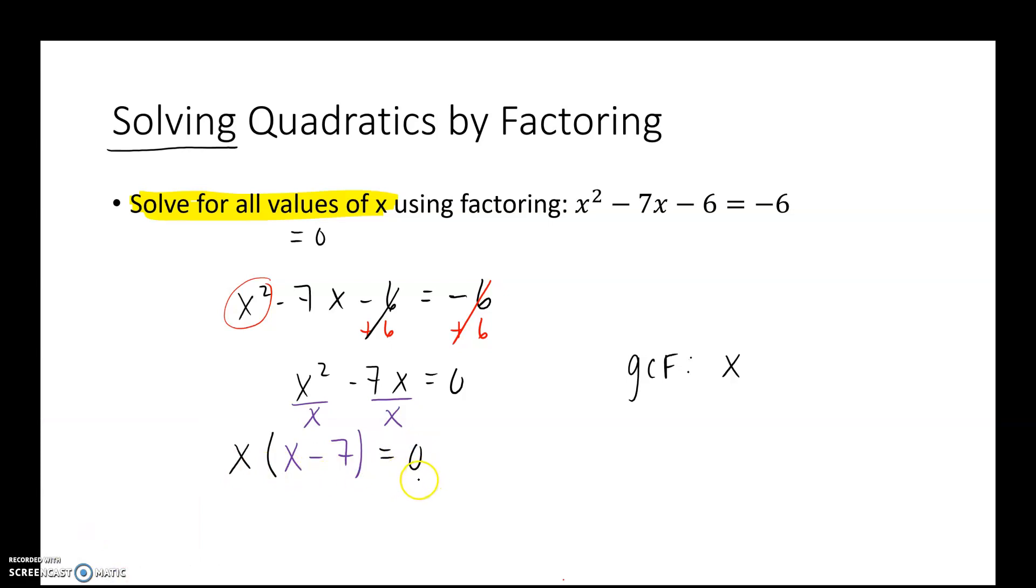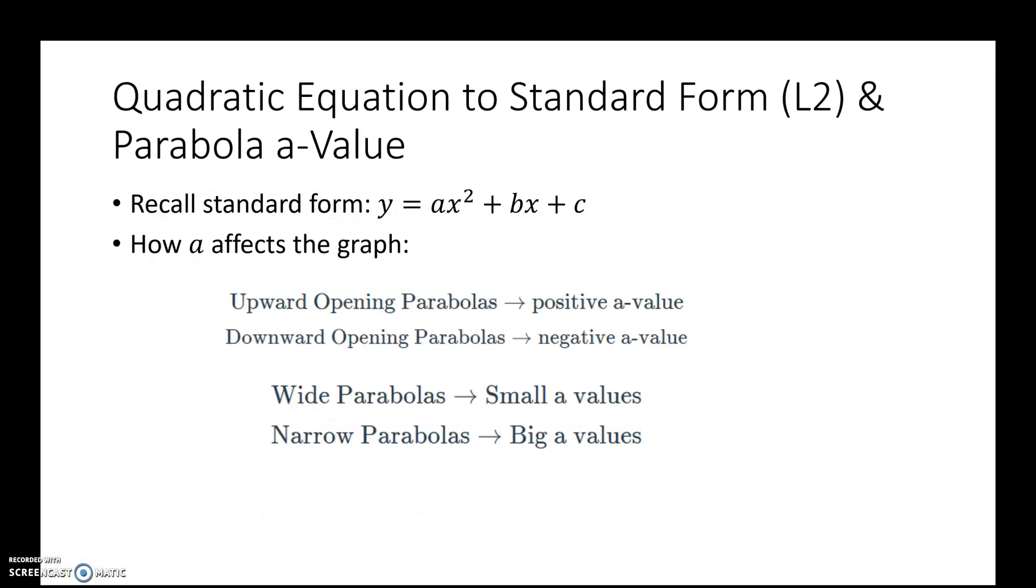Once the quadratic is in factored form, I set each individual factor equal to 0. And now I solve for x. Do not lose this. x equals 0 is one solution. And then adding 7 to both sides, I get x equals 7 is my second solution.